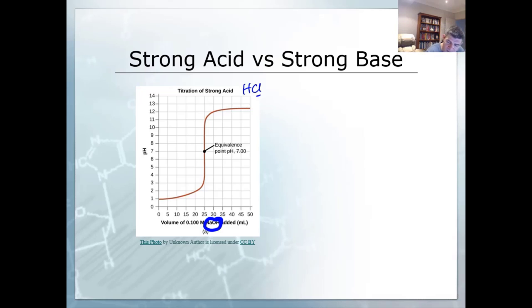Notice for the reaction between a strong acid and a strong base, we produce a neutral salt and water. The neutral salt is the key here because the neutral salt is going to have a pH of 7.